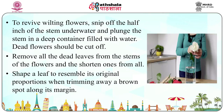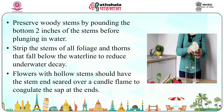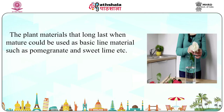To revive wilting flowers, snip off half an inch of the stem underwater and plunge the stem in a deep container filled with water. Dead flowers should be cut off. Remove all dead leaves from the stems and shorten any that are needed. Shape a leaf to resemble its original proportions when trimming away a brown spot along its margin. Preserve woody stems by pounding the bottom two inches before plunging in water. Strip stems of all foliage and thorns below the water line to reduce underwater decay. Flowers with hollow stems should have the stem end seared over a candle flame to coagulate the sap. Plant material that lasts long when mature can be used as basic line material, such as pomegranate and sweet lime.